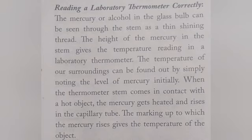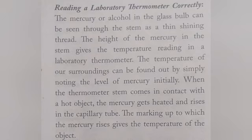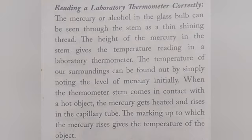Next is how to read the temperature of an object correctly. Mercury and alcohol are shiny liquids kept in the capillary tube, so they can be seen through the stem as a thin shining thread. By noting the level of mercury in the capillary tube we can measure the temperature reading. Whenever we measure the temperature of any substance, we should note the initial level of mercury. When the thermometer comes in contact with a hot object, the mercury gets heated, rises in the capillary tube, and the marking up to which the mercury level rises gives the temperature of the object.